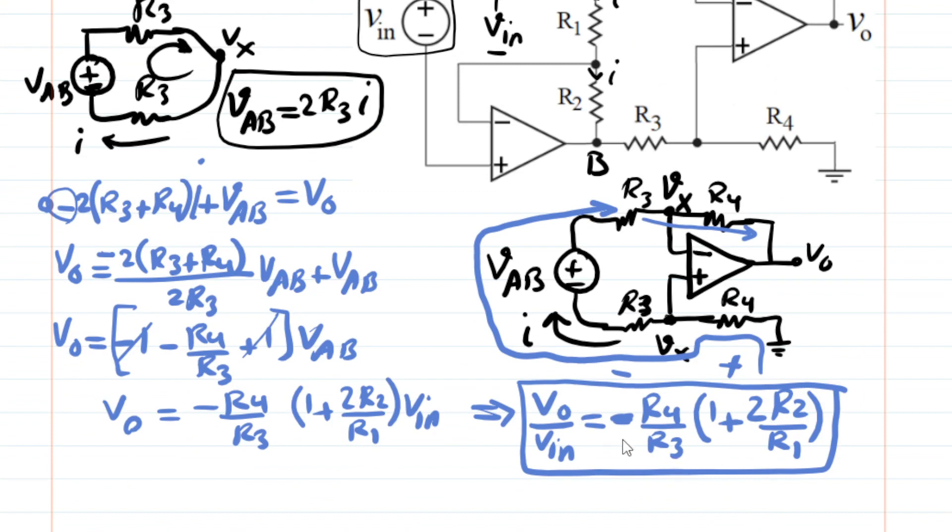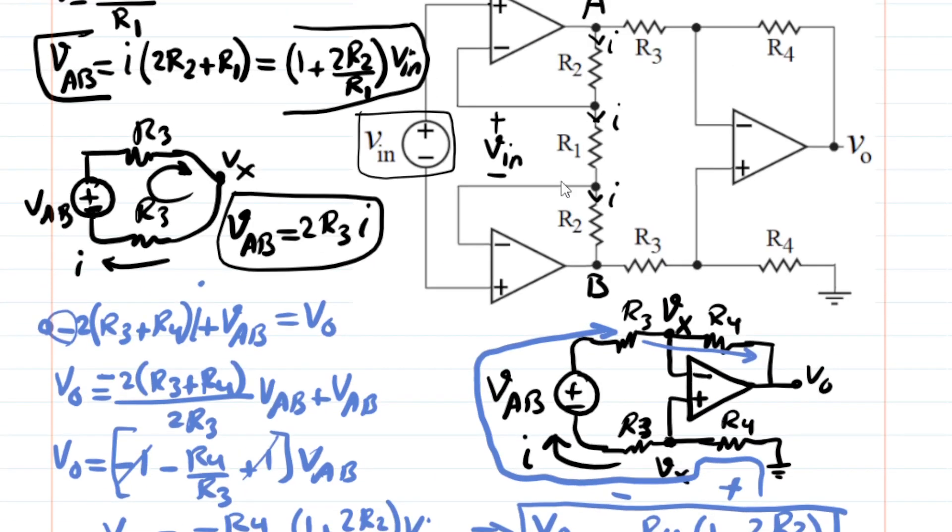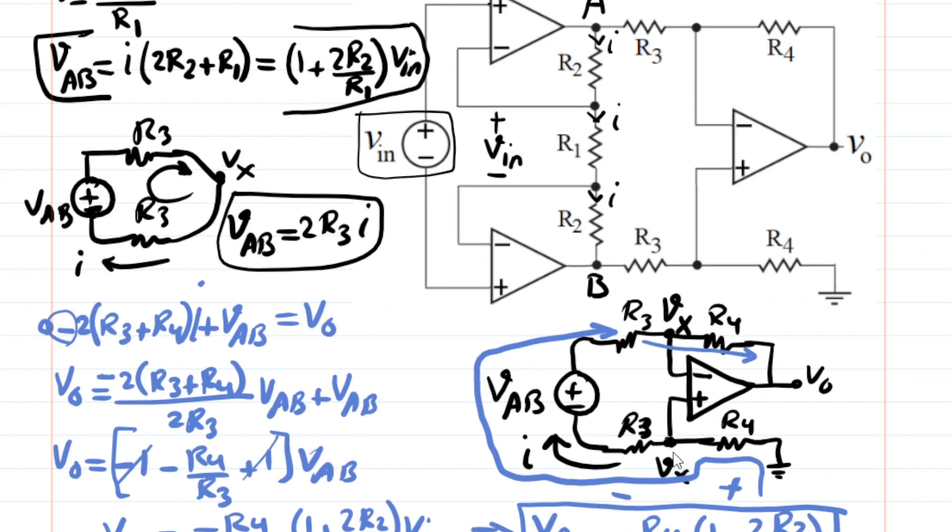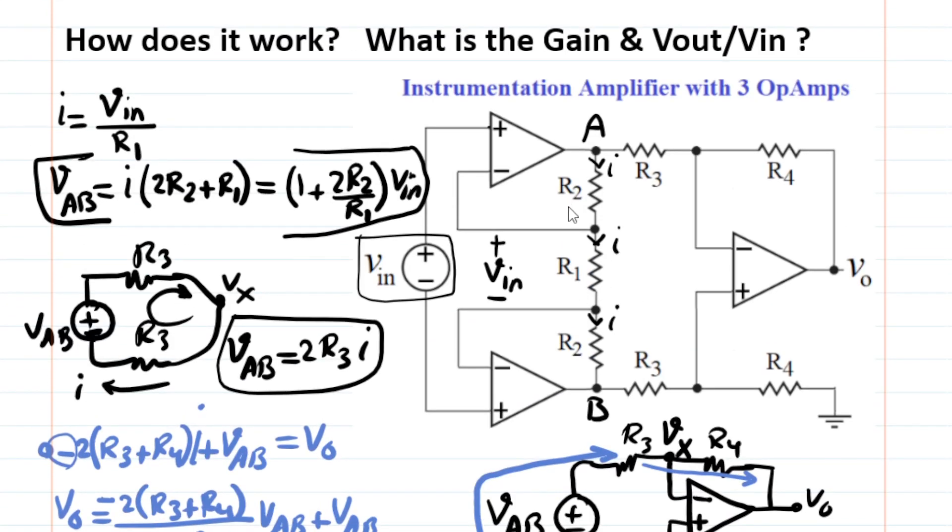So you can make the adjustment if, for example, you properly design a choice of R1 and R2. For example, you set, let's say, R1 twice R2. Then what you get here, 2 times R2 over R1 becomes 1. 1 plus 1 becomes 2. And therefore, the whole gain for instrumentation amplifier becomes negative 2 R4 over R3. So basically, you can say with the proper setup for R1 and R2, the whole gain is a function of ratio between R4 and R3 as well.